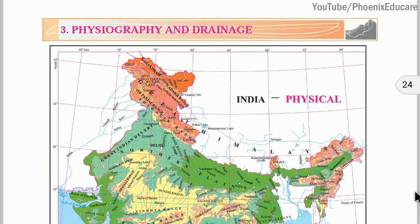Welcome to the third chapter of 10th Maharashtra State Board New Syllabus geography. Chapter 3 is Physiography and Drainage. In this chapter we will study about the Physiography and Drainage of Brazil and India.